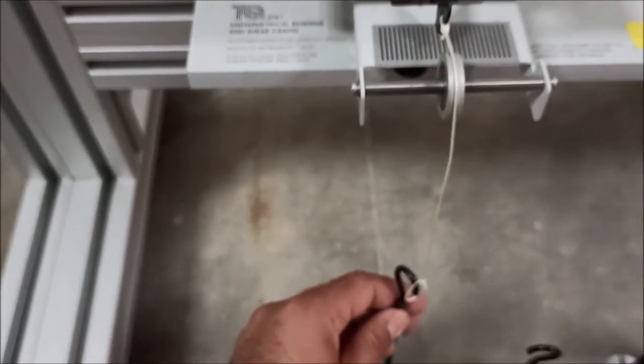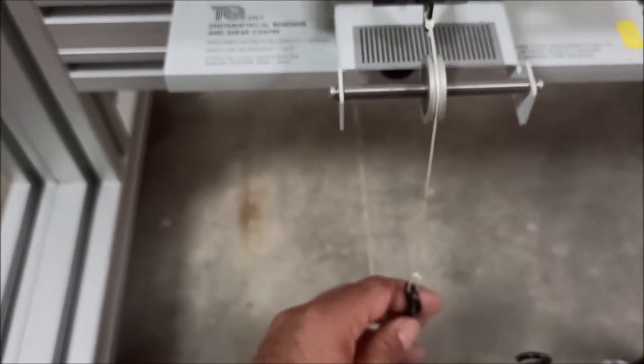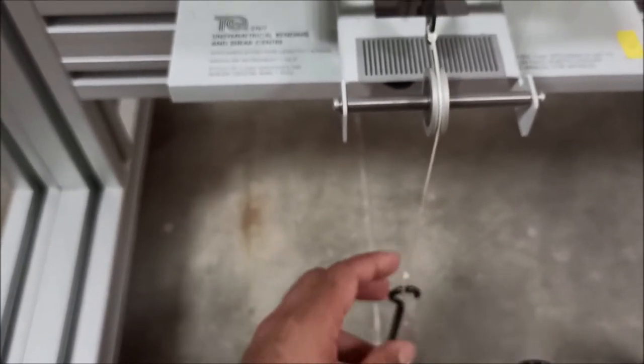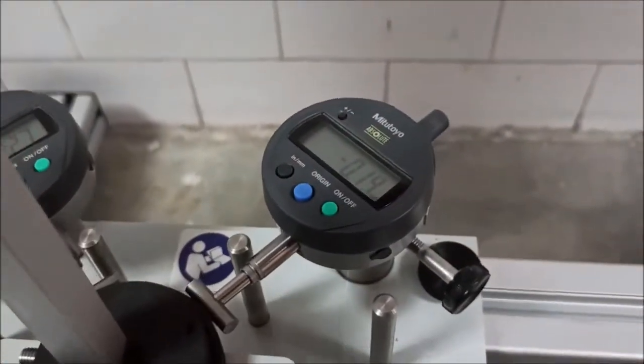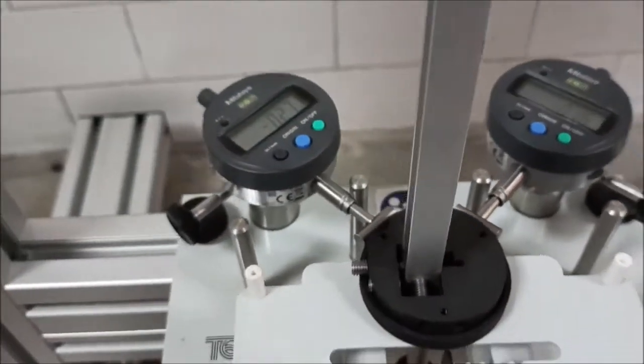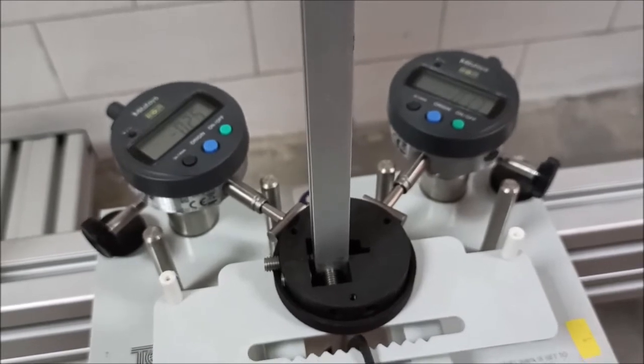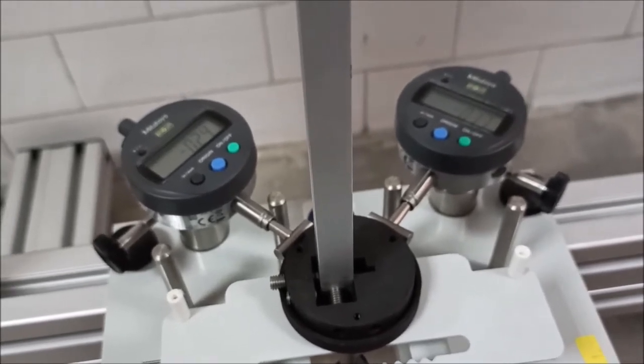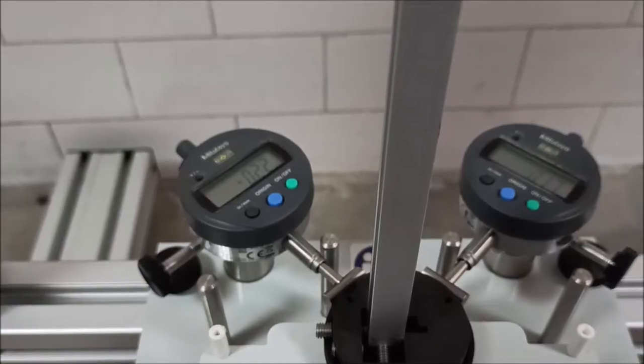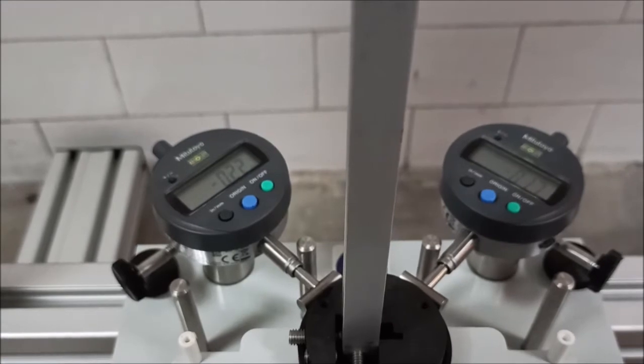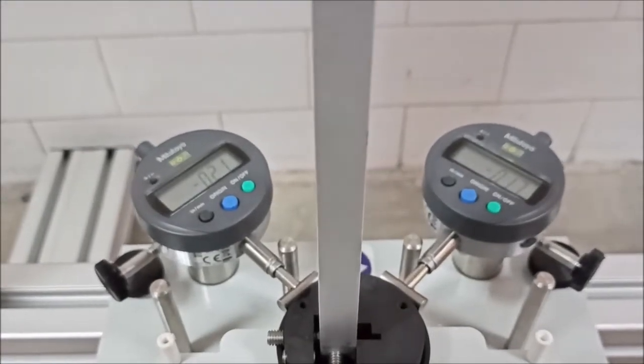We apply 100 grams and then see the readings in left indicator and right indicator. Similarly, when we put 200 grams, 300 grams, 400 and 500 grams, we will note the deflection readings in both dial gauges. We will measure these deflections for 100, 200, 300, 400 and 500 grams. This is for zero degrees.